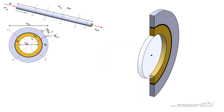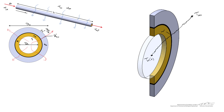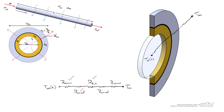Examining this from a resistance network perspective, we have a mean temperature Tm as a function of position x. The five resistances in series are: a convective resistance to the inner wall, a conductive resistance through the inner wall, a contact resistance, another conductive resistance, and finally a convective resistance into the outer fluid at temperature T infinity. The driving force is the temperature difference between the inside of the pipe and the exterior.